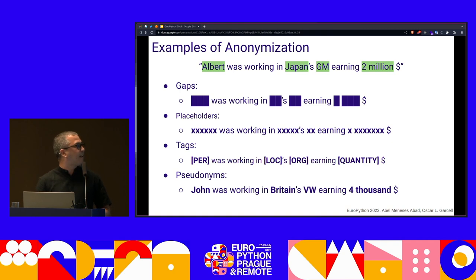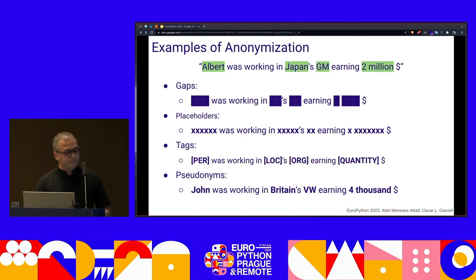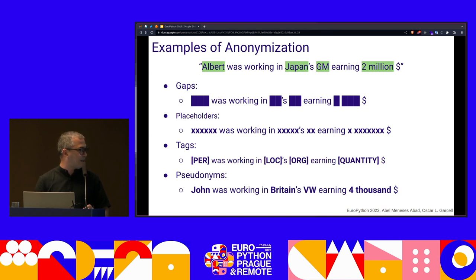Here is an example of these techniques applied to the sentence: 'Albert was working in Japan's GM, earning two millions.' We identify four entities: Albert is a name, Japan is a country, GM is an organization, and millions is a quantity. Using gaps, we strike through all the entities. Using placeholders, we replace the entity with the letter X using the same label from the entity recognizer. Using tags, we put the tag type and entity type instead of the entity. Using pseudonyms, the sentence becomes: 'John was working in Britain's BM, earning four something.'